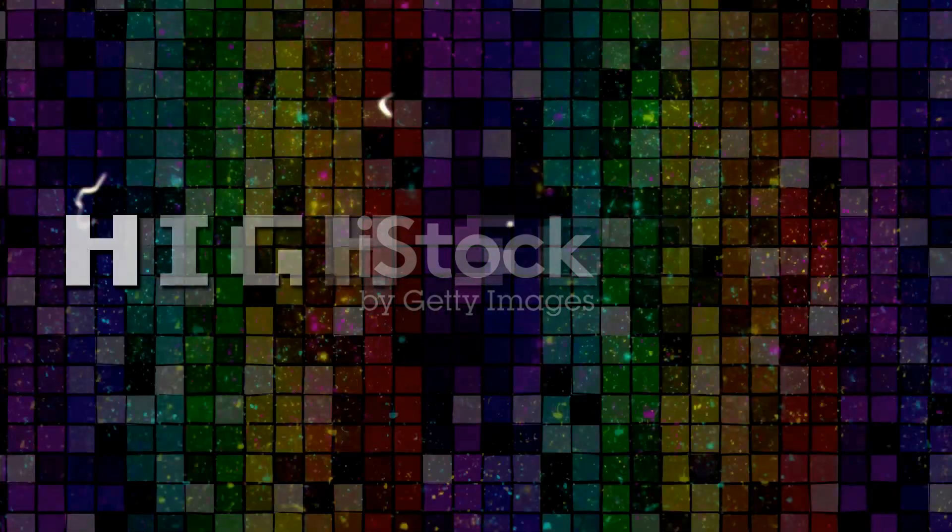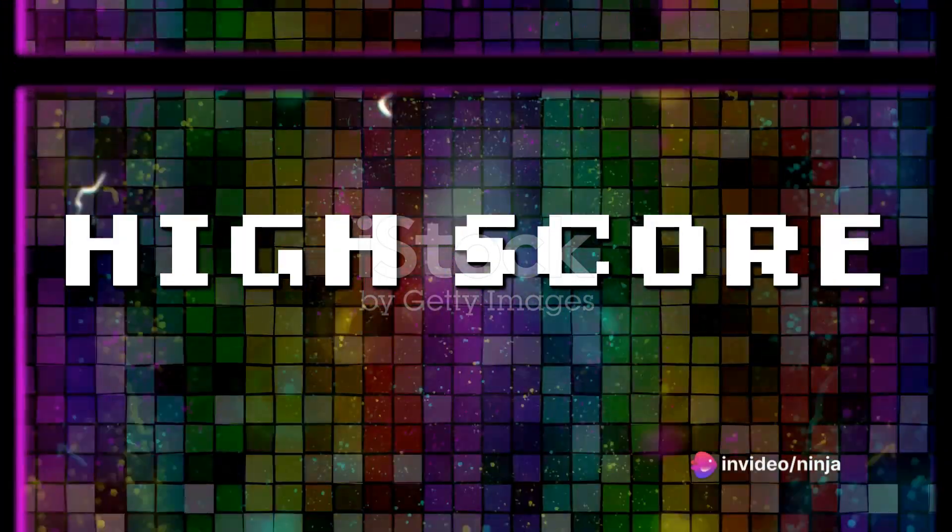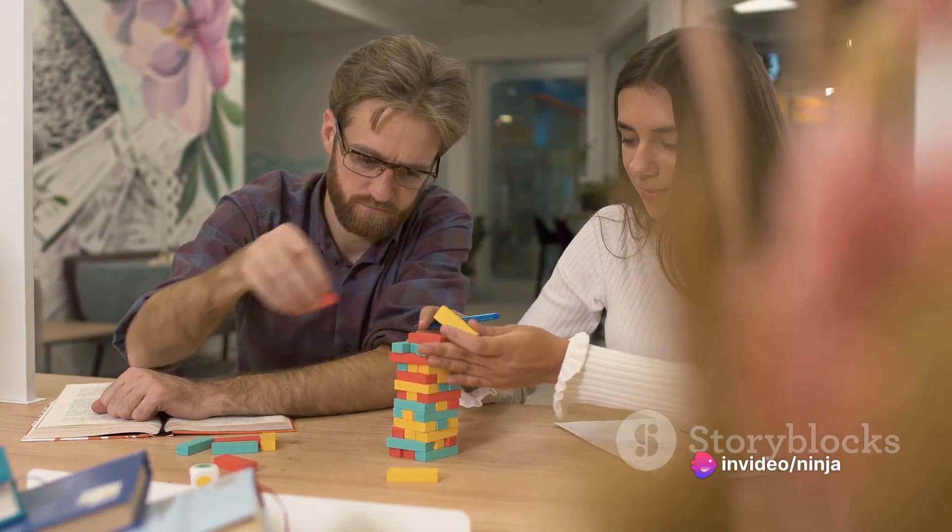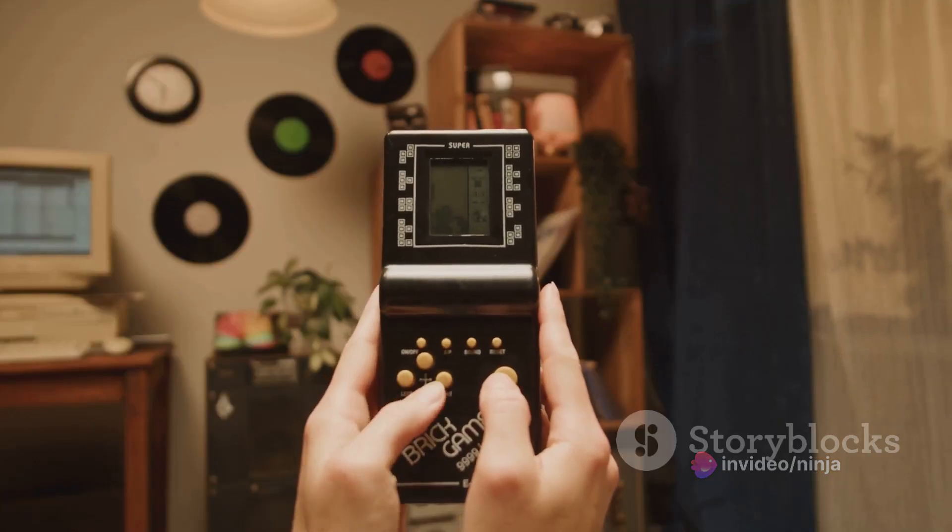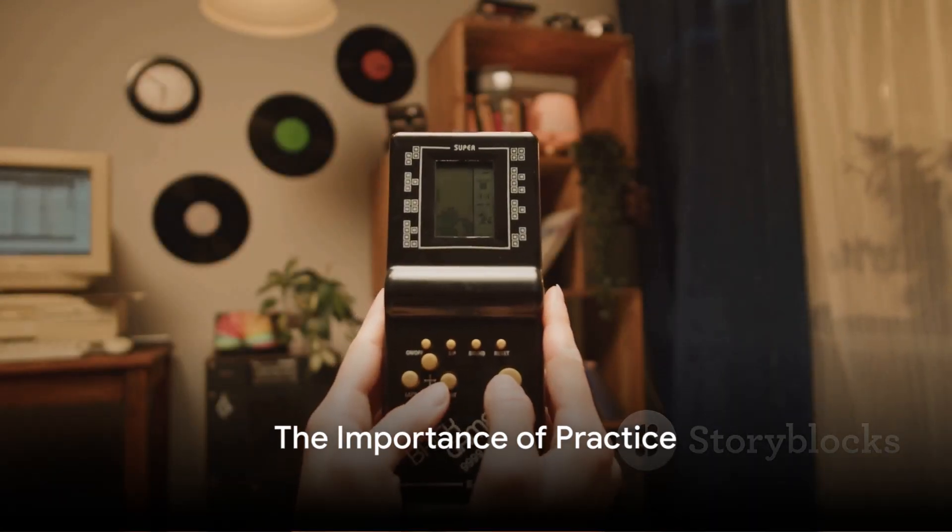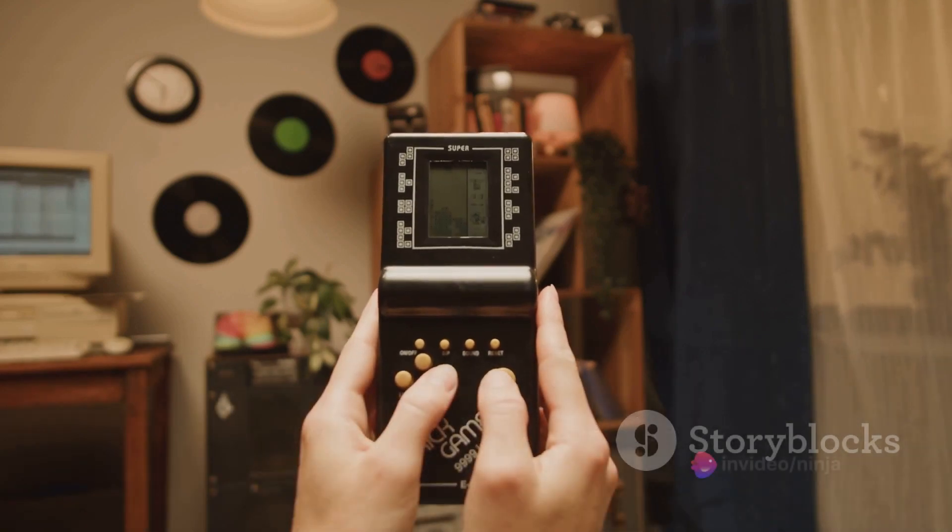The fourth tip is to aim for Tetrises. A Tetris is achieved by clearing four lines at once. It's the most points you can score with a single move. So always leave a one-block-wide gap on the side of your stack. When the long straight block comes, slide it down this gap for a big score boost.